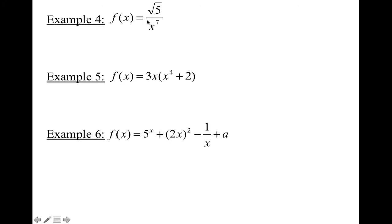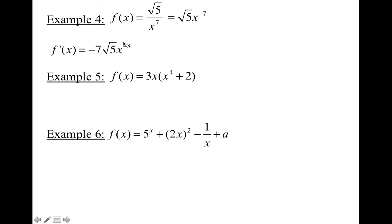Example 4: we have a constant on top and x to the 7th on the bottom. We bring x to the 7th up to the top by making it a negative exponent, giving us a constant times x to the negative 7. We bring the negative 7 down in front, multiply it with the square root of 5, and subtract 1 from the exponent. Since the original problem has no negative exponents, we rewrite by keeping the constant on top and moving x to the 8th to the bottom.